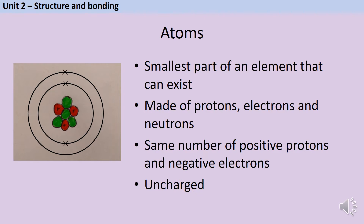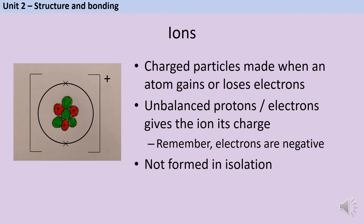As soon as that atom starts to bond, it will gain or lose electrons, and therefore the number of protons and electrons is no longer balanced. Instead of being neutral, the atom will become charged, and this is what we call an ion. Ions are charged particles that are made when a neutral atom gains or loses electrons and stops being neutral.